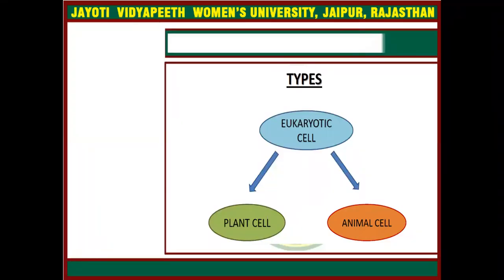So first let me introduce what are the eukaryotic cells. 'Eu' means true and 'karyon' means nucleus. The cells which have a true nucleus are known as the eukaryotes. The nucleus of the eukaryotes is surrounded by a nuclear membrane. The eukaryotes are of two types: the first one is plant cells and the second one is animal cells.